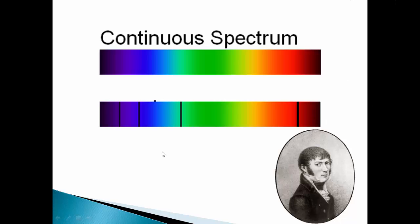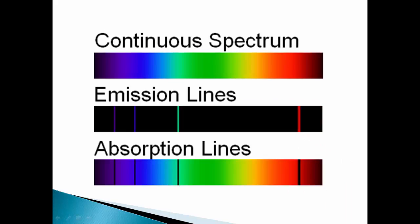The reason for Fraunhofer lines was later explained using the Bohr atomic model along with absorption lines. If you heat a gas and you look at its spectrum, that spectrum looks something like this. These lines are called the emission lines. The reason for emission lines was also explained by the Bohr atomic model.